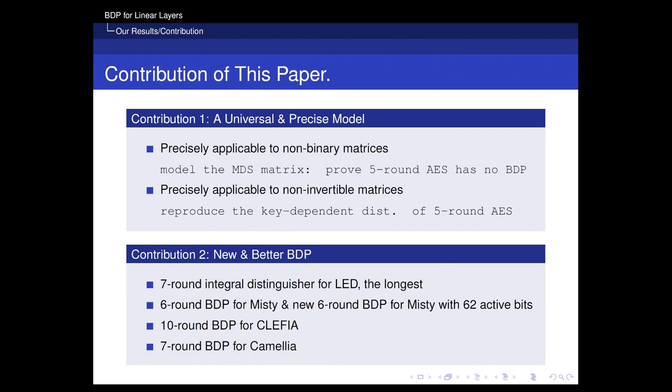Considering that the S-method is universal but not precise, and the ZR method is precise but not universal, our paper proposes a new model which is both universal and precise. It can be precisely applied to non-binary matrices, so it can be used to model the MDS matrix. We can prove that 5-round AES has no bit-based division property, and our new model can be precisely applied to non-invertible matrices, allowing us to reproduce the key-dependent distinguisher of 5-round AES.